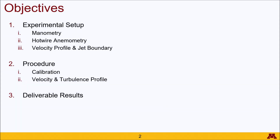As a walkthrough of what we're going to cover in this video, we'll start out with the experimental setup going into the manometry, hot wire anemometry, and velocity profile and jet boundary. Then we'll talk about the procedure broken up into two steps: one for calibration and then the next one for determining the profiles for velocity and turbulence. And then we'll finish off with the results that we expect you to get from this experiment.